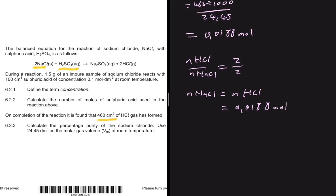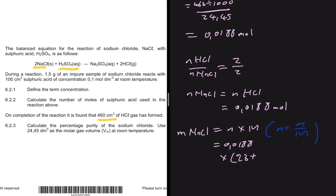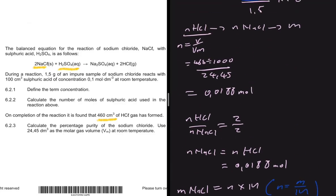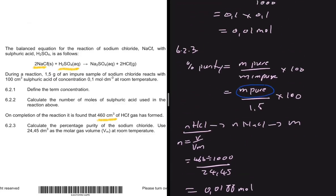Now we find the mass of NaCl. Mass equals moles multiplied by molar mass, which comes from the formula n = m/M. The molar mass of NaCl is 23 + 35.5 = 58.5 g/mol. So mass = 0.0188 × 58.5 = 1.0998 grams.